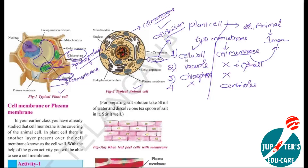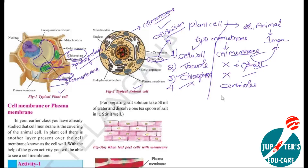So, to summarize: cell wall is present in plant cell; only cell membrane is present in animal cell. Vacuoles are present in plant cell; vacuoles are absent in animal cell. Chloroplast is present in plant cell; chloroplast is absent in animal cell. Centrioles are absent in plant cell; centrioles are present in animal cell. These are the differences between these two cells.